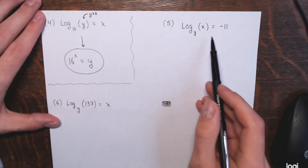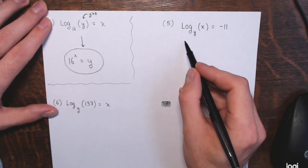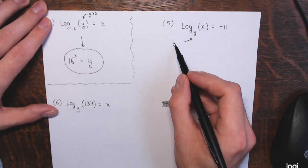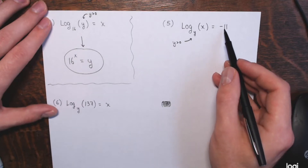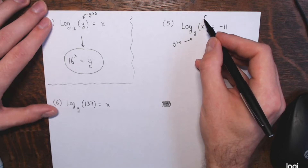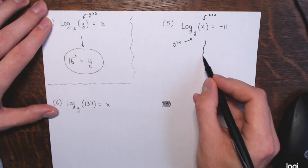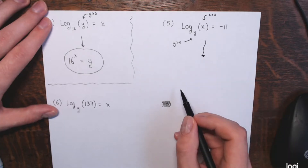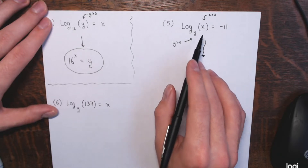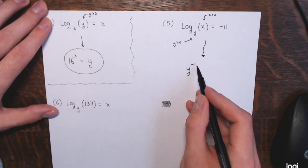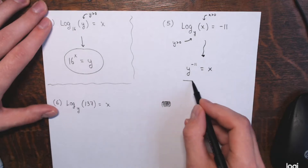Example 5: this time the base on the logarithm is a variable. Remember, the base has to be positive. The only number that can be anything is the output — see the negative 11 over here; this can be anything. The base on the log has to be positive, and the input of the logarithm function has to be positive as well. The logarithm base y of x equals negative 11 means the exact same thing as y to the negative 11 power equals x. Base to the output equals the input — that's how you change to equivalent exponential form.